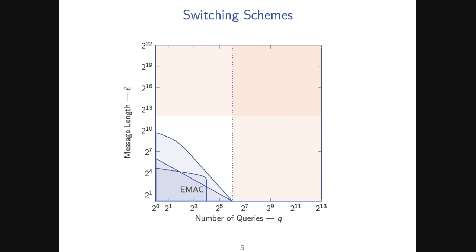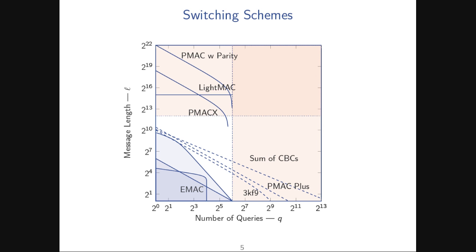To go beyond the number-of-queries limit, there are several beyond-birthday-bound constructions: Sum of CBCs, PMAC-Plus, and 3KF9. Besides those, there are also constructions which allow querying much longer messages, going basically vertically in terms of bounds: PMAC with parity, LightMAC, and PMACX. The focus of this research is understanding this message-length dependence — what techniques are used and how they work.